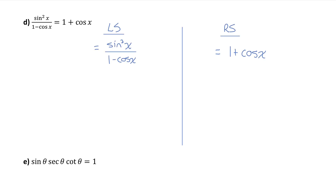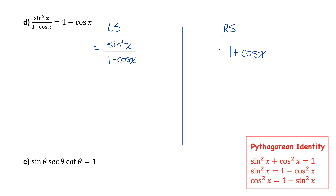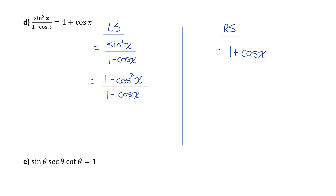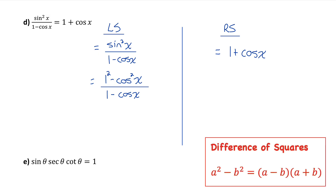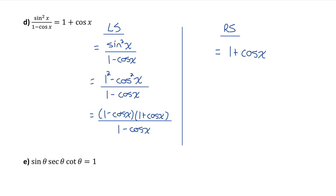I'll separate into left and right side. This is the first identity where it may not be obvious where to start. Everything is already in terms of sine and cos and there are no fractions to combine. But remember to look out for difference of squares. Based on the Pythagorean identity, sine squared x equals 1 minus cosine squared of x. That 1 could be thought of as 1 squared, so we have a difference of squares. That factors to 1 minus cosine of x times 1 plus cosine of x. The factors of 1 minus cosine of x cancel, and what remains on the left is 1 plus cosine of x, which is exactly the right side. So this equation is an identity.